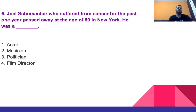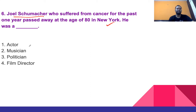Question 6: Joel Schumacher, who suffered from cancer for the past one year, passed away at the age of 80 in New York. He was a — options: actor, musician, politician, or film director. The right answer is film director.